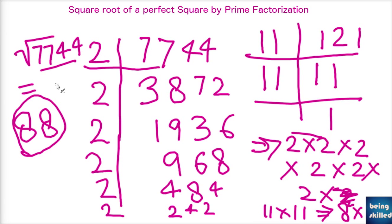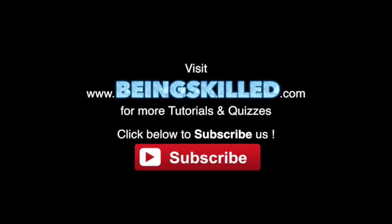This is the process of calculating the square root of a perfect square by the prime factorization method. Thank you for watching the tutorial. Please don't forget to click on the subscribe button for receiving more updates from Being Skilled.